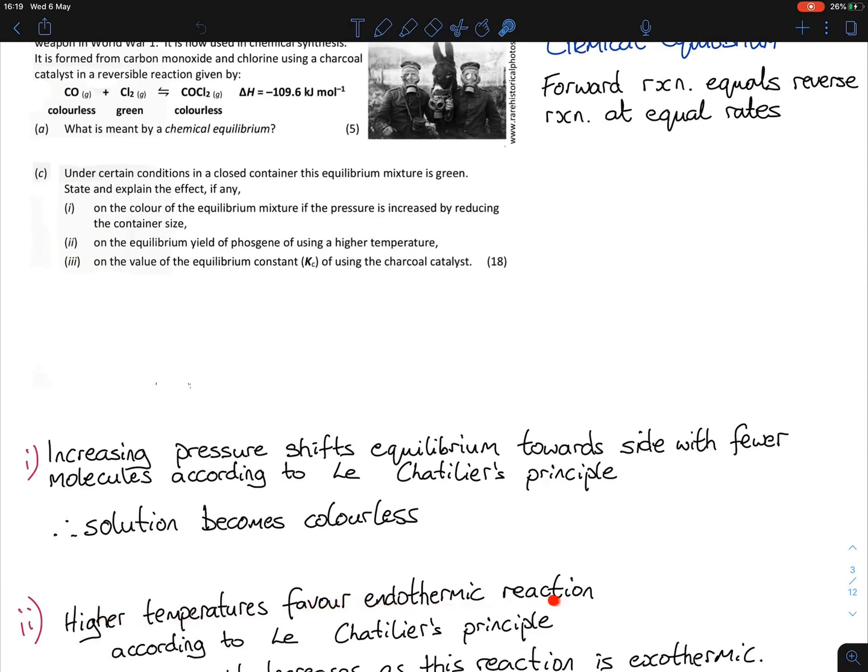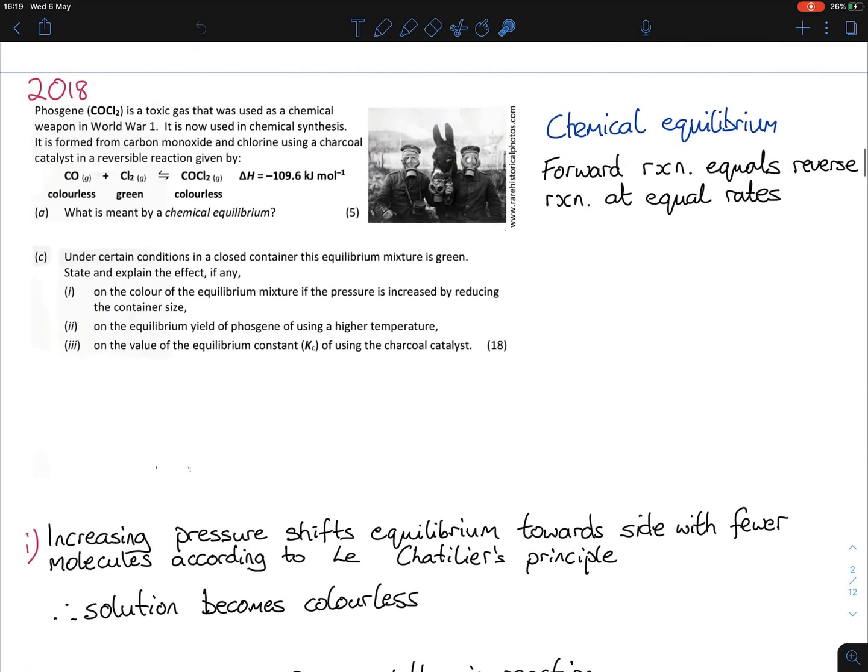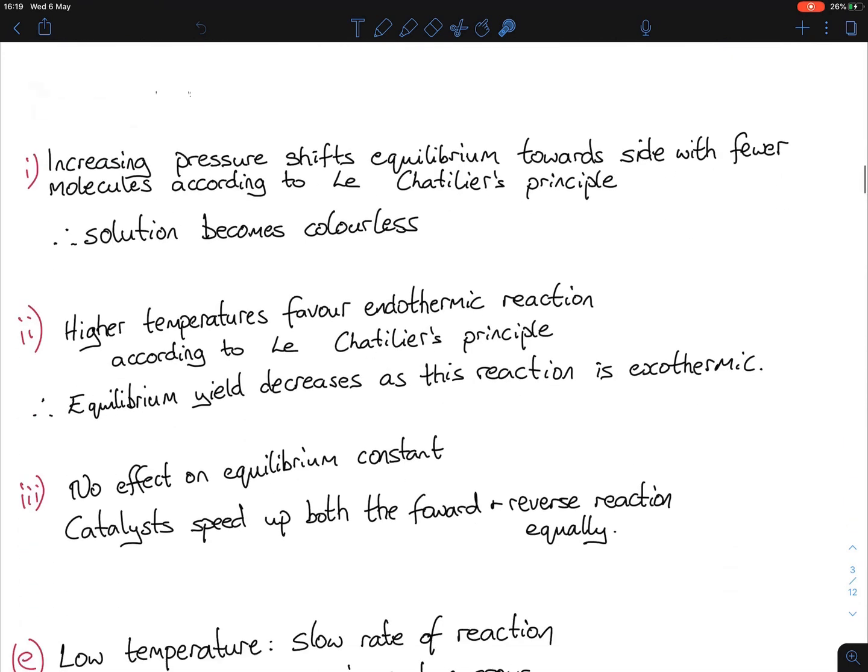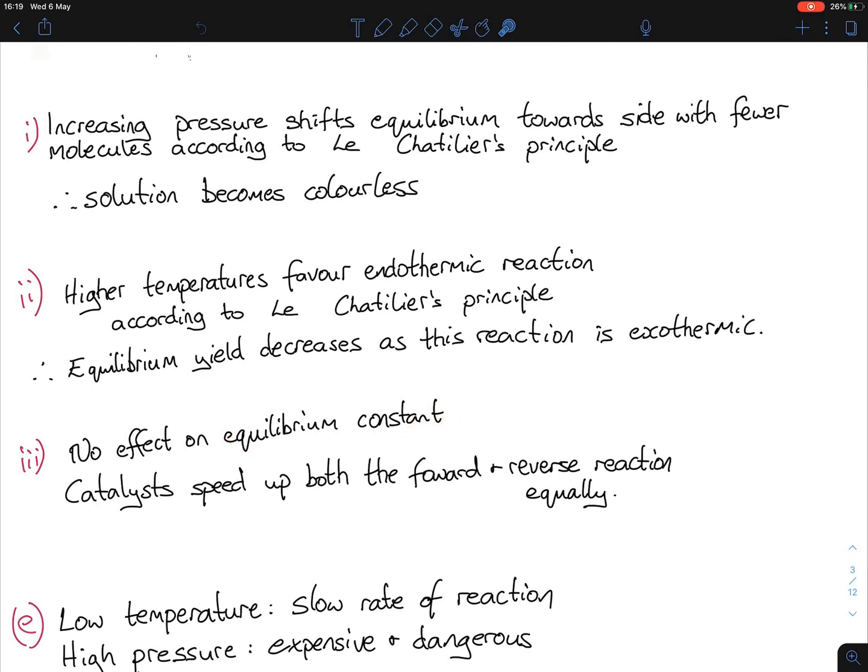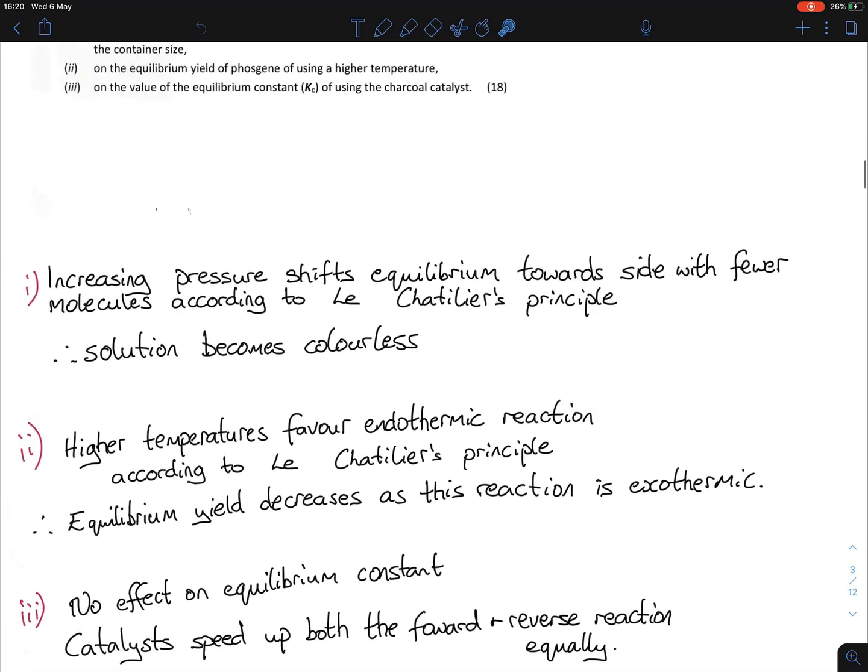Last part: The effect, if any, on the value of Kc using a catalyst. That's an easy one. The only thing that affects the Kc, the equilibrium constant, is temperature. Pressure, concentration, and catalysts have no effect. So your answer: no effect on the equilibrium constant. The explanation is catalysts speed up the reaction, both the forward and reverse reaction equally.